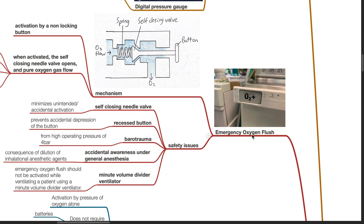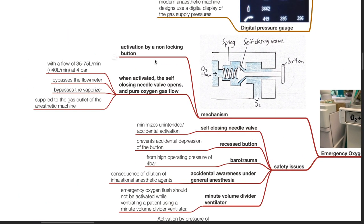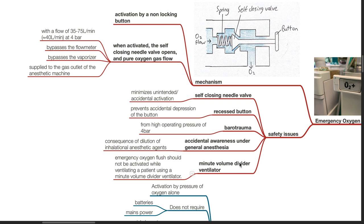Emergency oxygen flush. Mechanism: it is activated by a non-locking button. When activated, the self-closing needle valve opens and pure oxygen flows at 35 to 75 litres per minute, or 40 litres per minute at 4 bar. It bypasses the flow meter and the vaporizer, and oxygen is supplied to the gas outlet of the anesthetic machine. Safety issues: the self-closing needle valve minimizes unintended activation. The recessed button prevents accidental depression. Barotrauma may occur from the high operating pressure of 4 bar. Accidental awareness under general anesthesia can occur due to dilution of inhalational anesthetic agents. Emergency oxygen flush should not be activated while ventilating a patient using a minute volume divider ventilator.